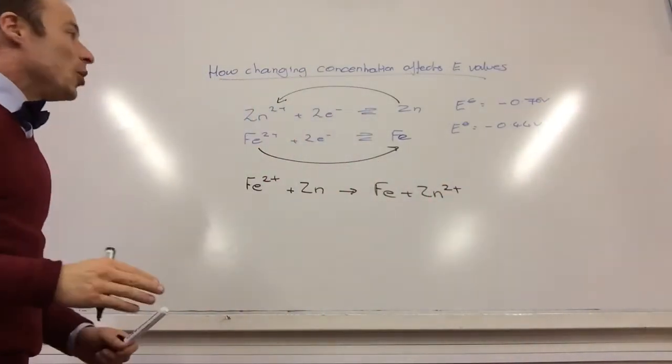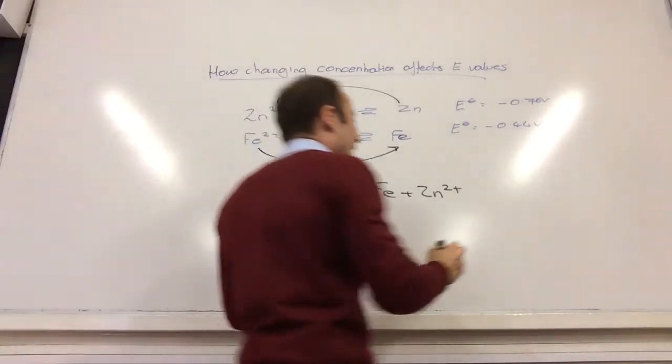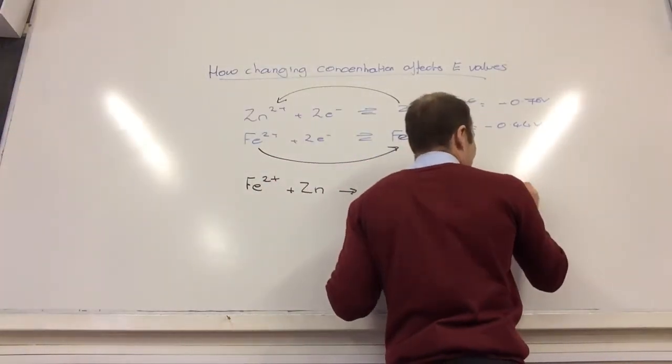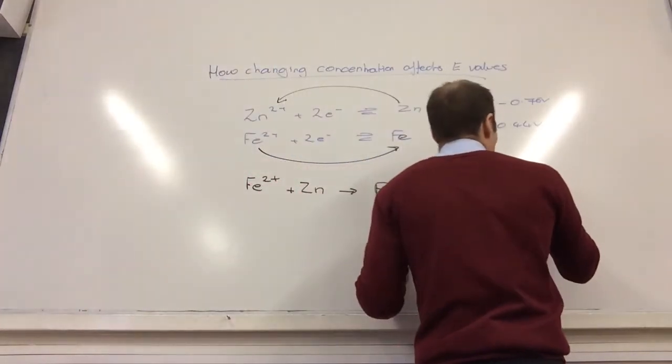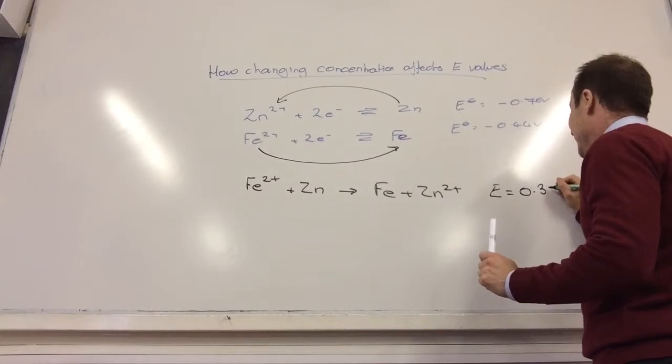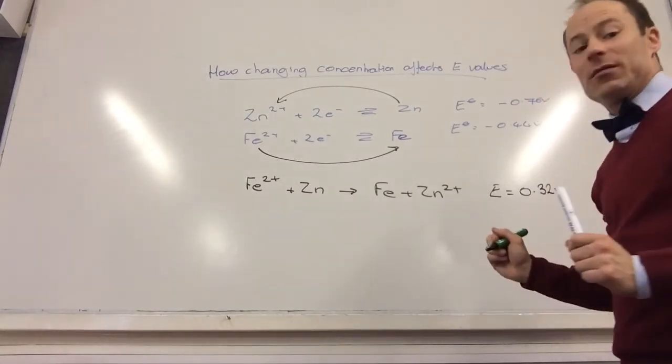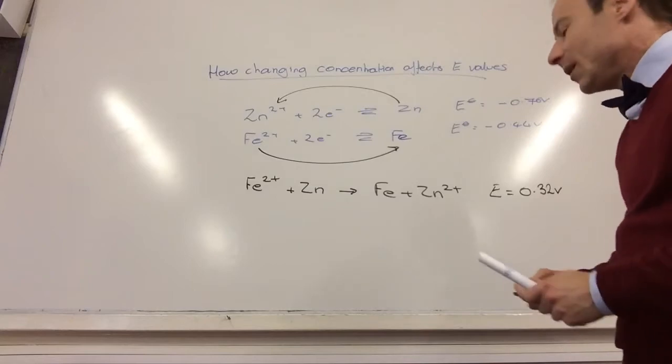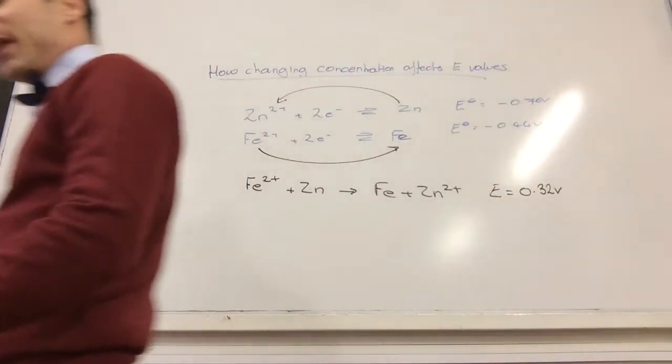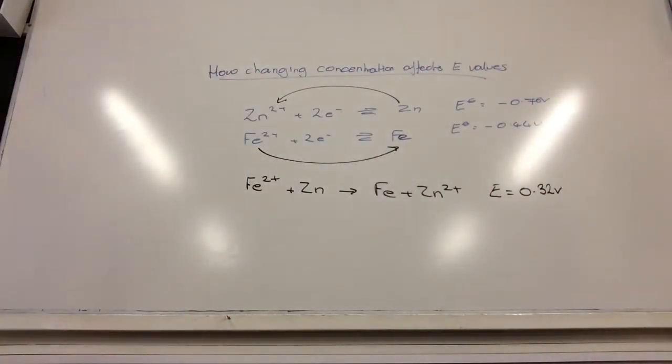That's the overall equation, and the voltage for that, my potential would be 0.32 volts, I hope. Yeah. Oh, people are happy chappies with that. I'm still a bit concerned about the arrows.